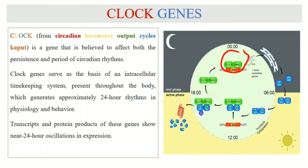PER is basically the period gene and CRY is the cryptochrome gene. The messenger RNA then leaves the nucleus and binds to the ribosomes that are present on the endoplasmic reticulum.